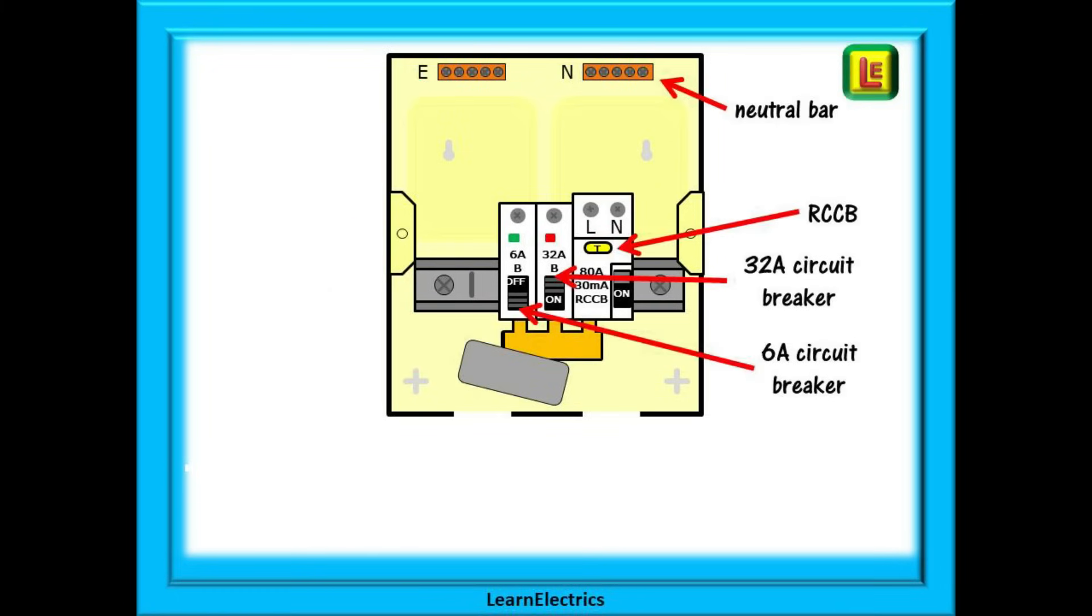Then we have the neutral bar, the common point for all the neutrals, the RCCB sometimes marked RCD is the main switch for the garage unit and two sometimes three miniature circuit breakers of suitable rating for the expected use. Here we've shown a 32 amp MCB for the socket circuit and a 6 amp MCB for the lighting circuit and that is usually enough for a garage, shed or small home office.